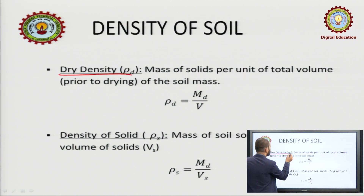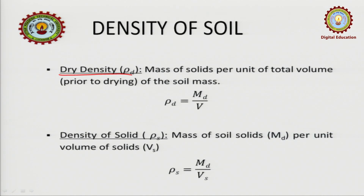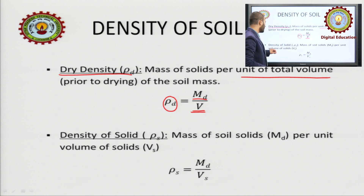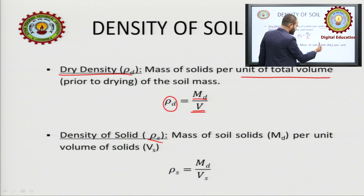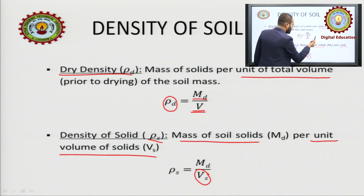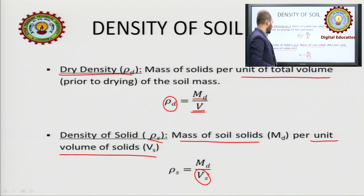Then, dry density. What is dry density? Represented as rho-d, in dry conditions the total mass is only due to the soil solids, because air has no mass. So we can write rho-d as md upon total volume. The next parameter is density of solids, represented by rho-s, which is nearly the same but uses the volume of soil solids (Vs) instead of total volume. So it is md by Vs.